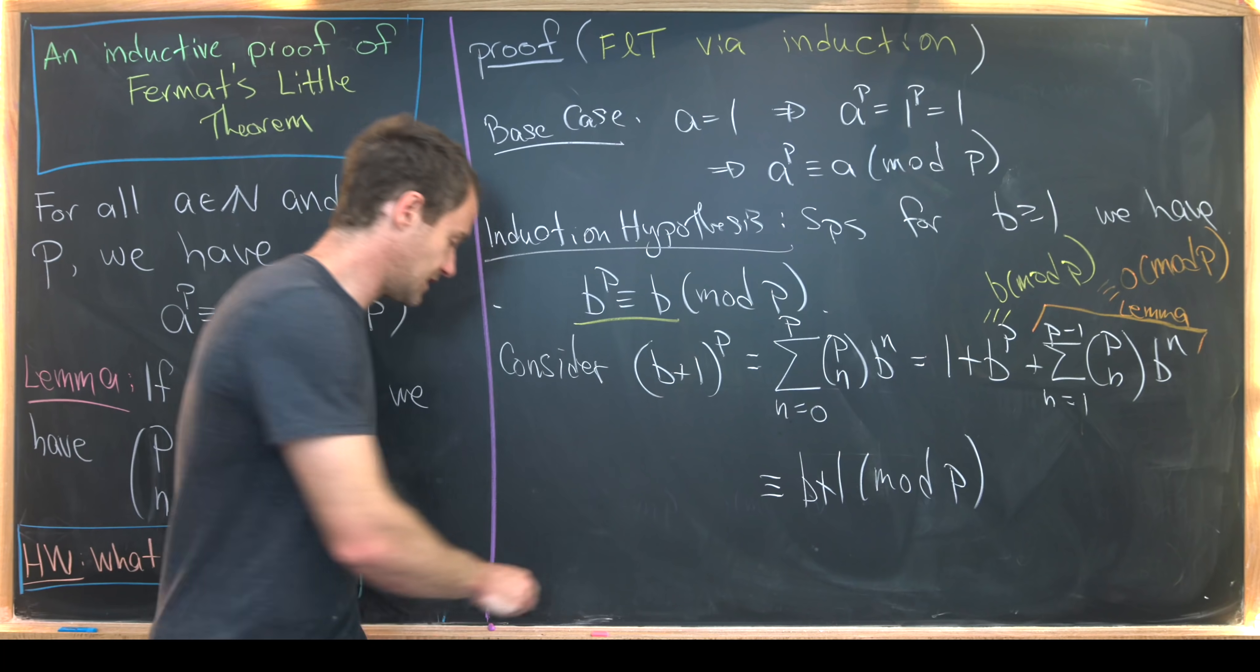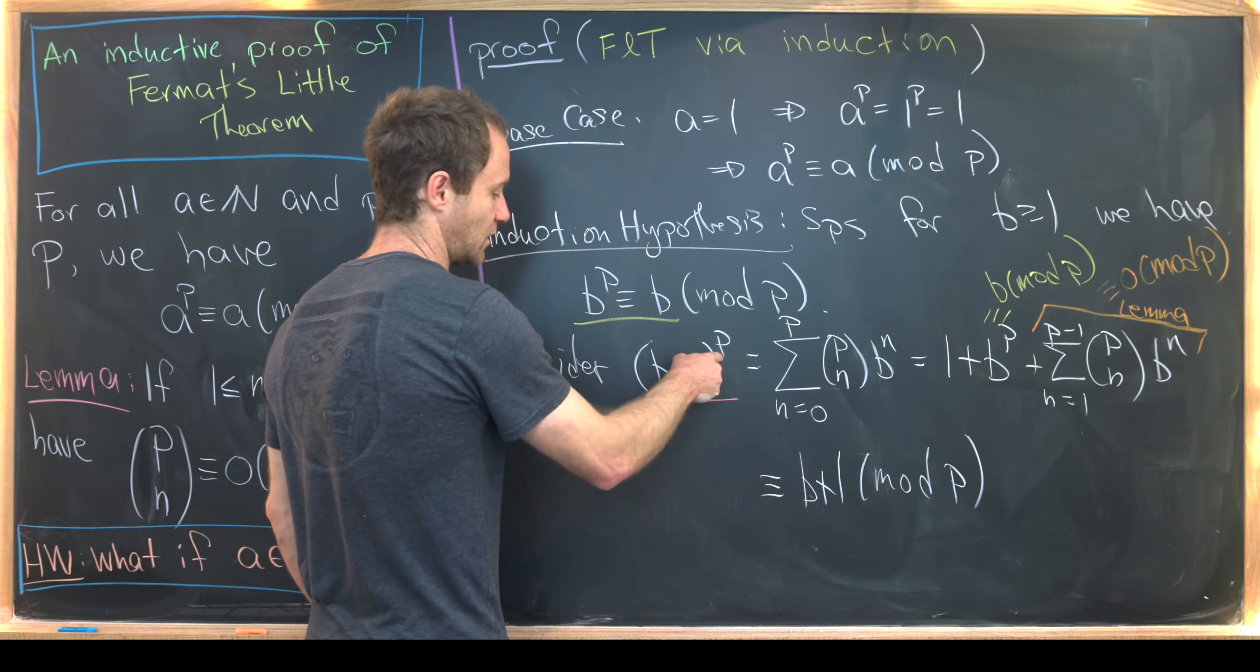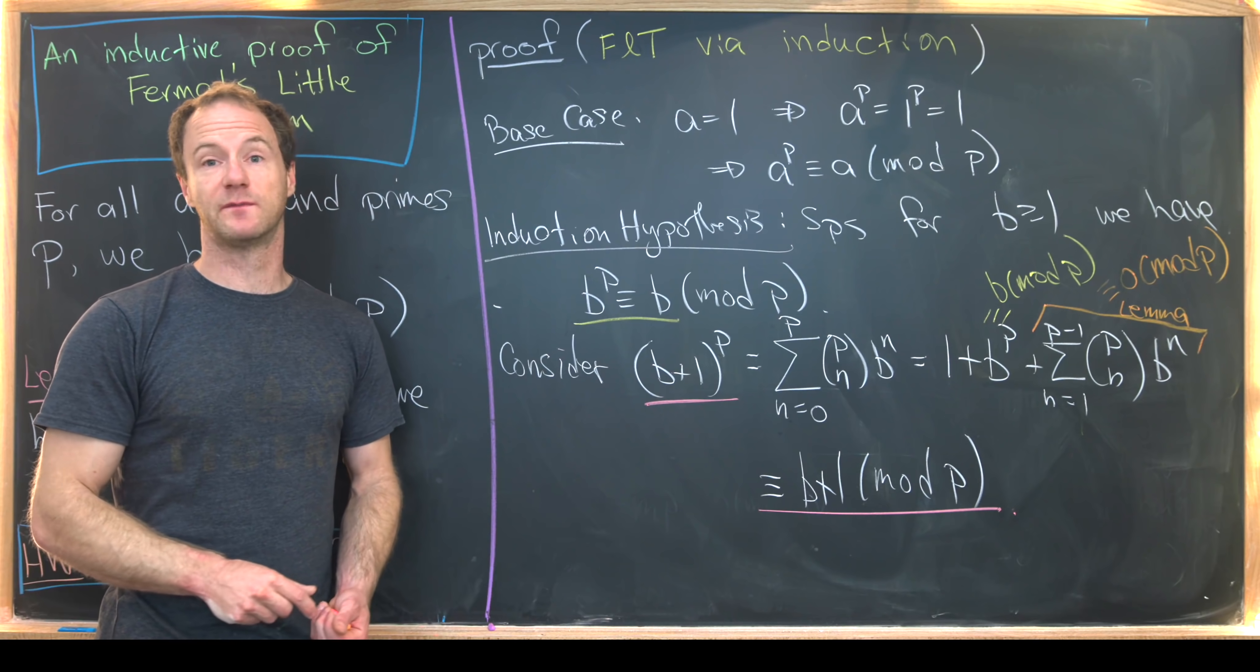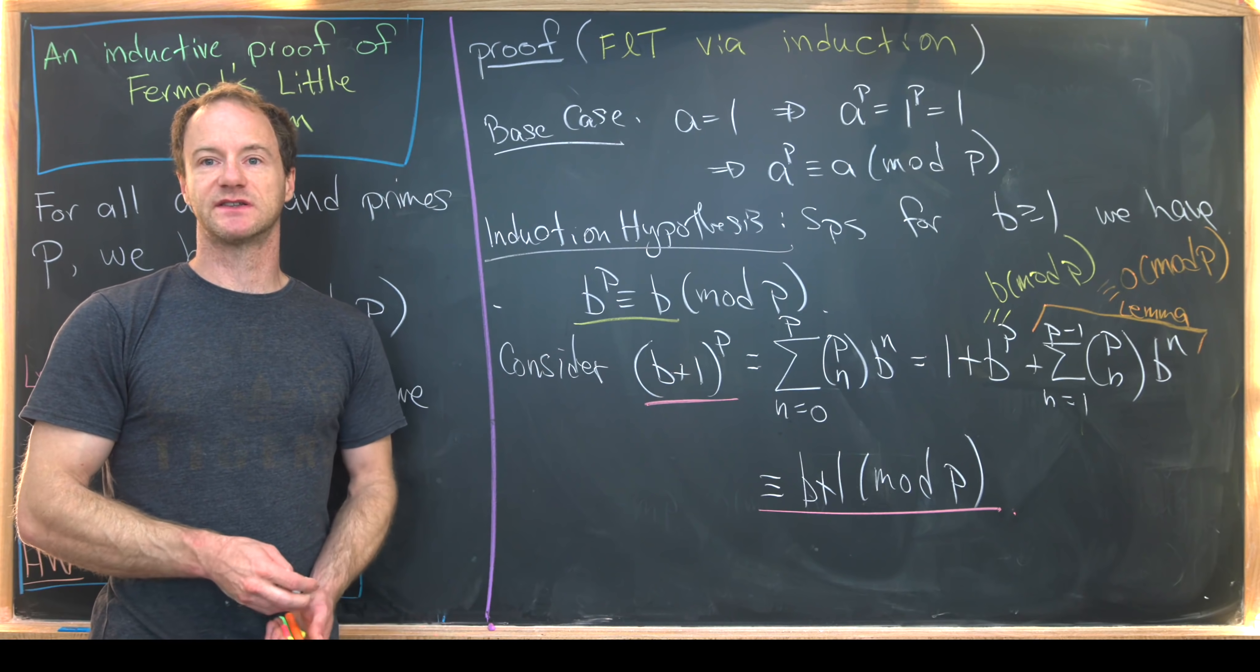So in the end, we have B plus 1 to the P is congruent to B plus 1 mod P. And that finishes this proof by induction. And that's a good place to stop.